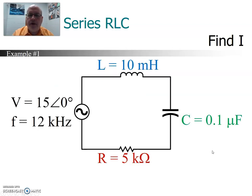So here's a circuit we're going to look at. We have a voltage source of 15 angle zero, inductor 10 millihenries, capacitor 0.1 microfarad, and a 5k resistor. And we want to find the current in this circuit.